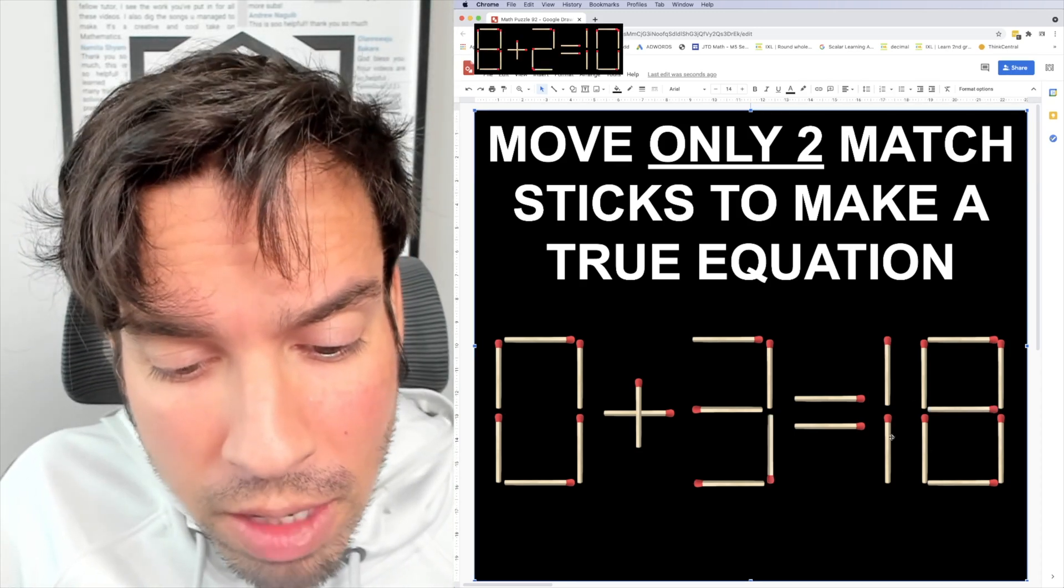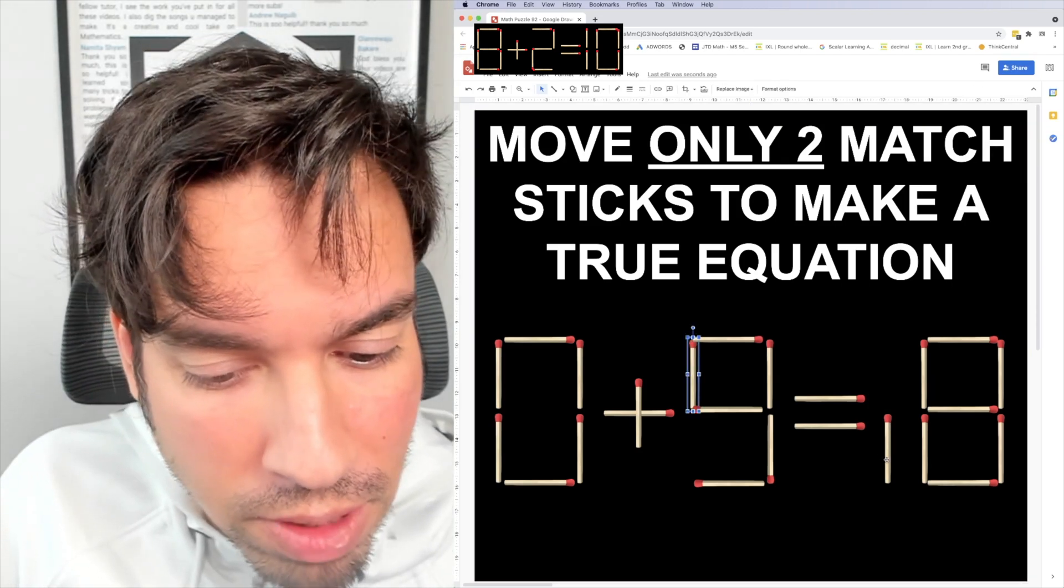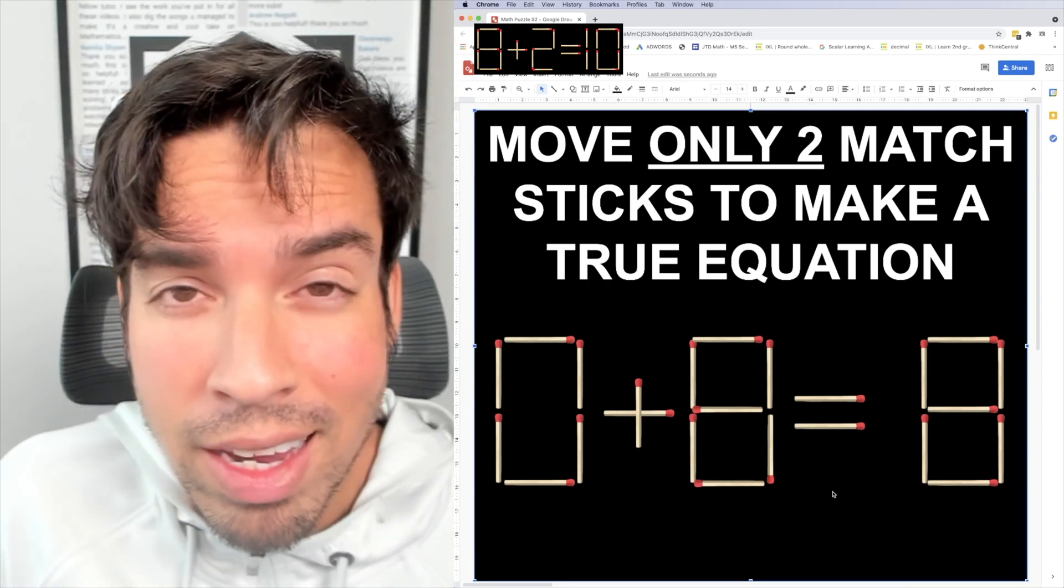Solution two involves the movement of this one as follows. First matchstick goes on the top left of that number and the second one goes there. 0 plus 8 equals 8. Boom, done.